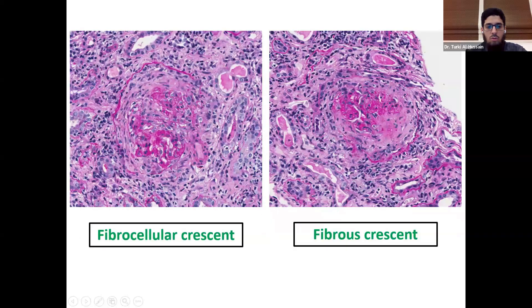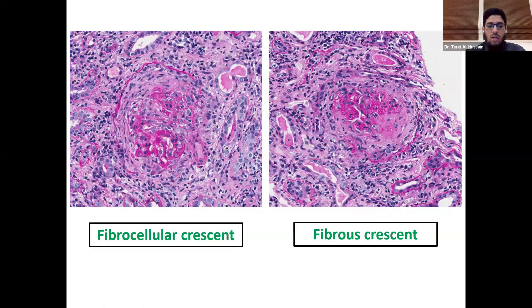This is an example of a fibrocellular crescent on the left side — you can see cellularity between 25 to 75% with more fibrous area. In comparison, on the right side you can see a fibrous crescent with more than 75% fibrous components, indicating chronicity. Cellular and fibrocellular crescents are still considered active lesions.